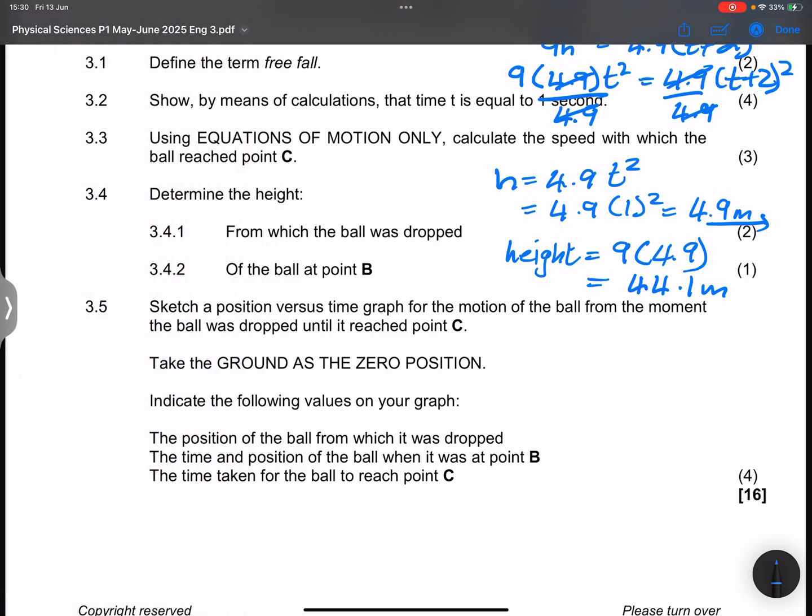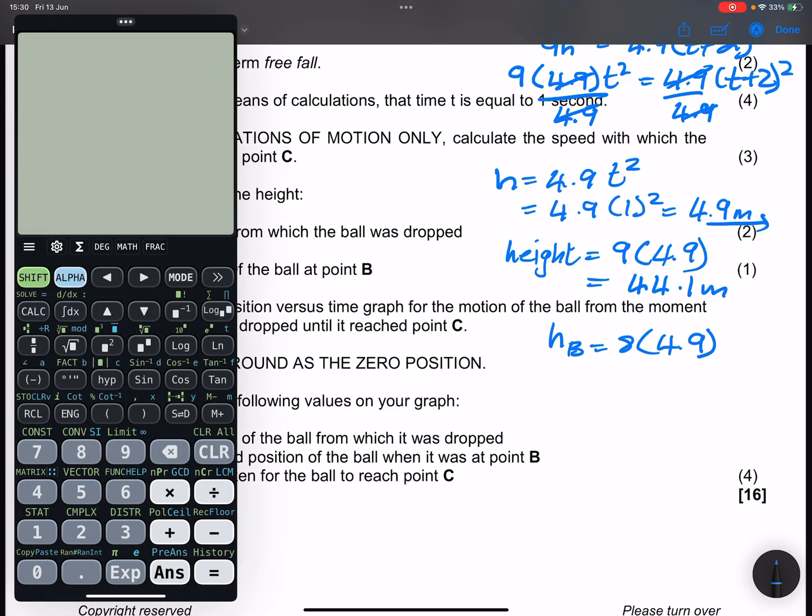That is the height from above the ground, from where the ball was dropped. And then they say to us, the height of the ball at point B. So how far is point B? It's 8H. So we can say that the height from B would be 8 multiplied by 4.9. Or you can say it's 44.1 minus the 4.9. That will give us the same value. So that would be 8 times 4.9, and I get 39.2 meters.